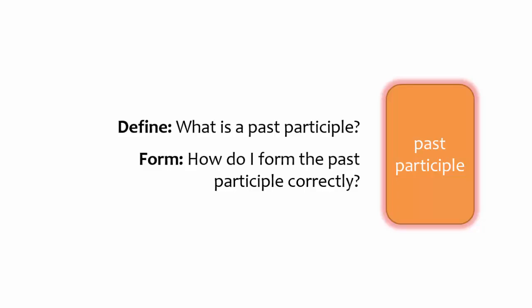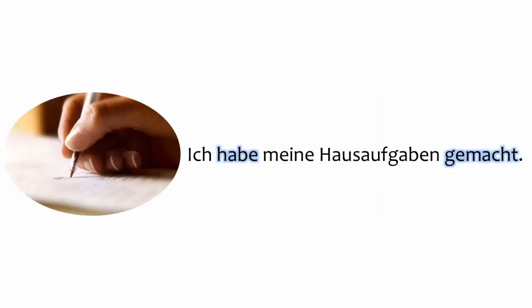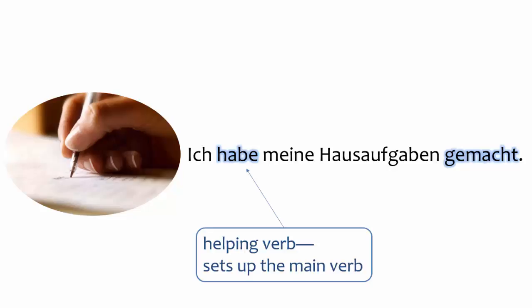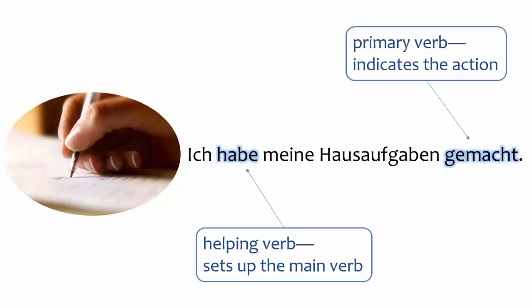First, let's define what a past participle is, and then look at how to form past participles. Clauses in the compound past tense have two verbs: the helping verb and the past participle. These two verbs always function together. The function of the helping verb is to set up the primary verb, which indicates the action. Note that the primary verb is in the past participle form.